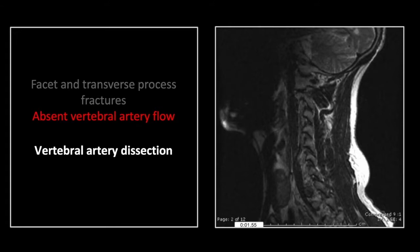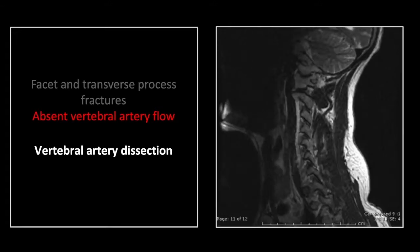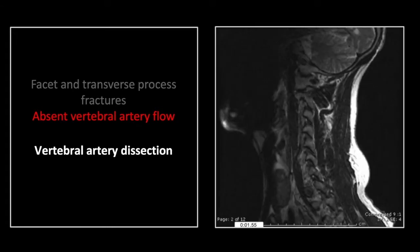On this patient's associated MR, note that the hyperintense, dissected, and thrombosed vertebral artery can be appreciated almost throughout its extent on the sagittal view. Comparing to the normal opposite side, you can appreciate the flow void within the vertebral artery there.